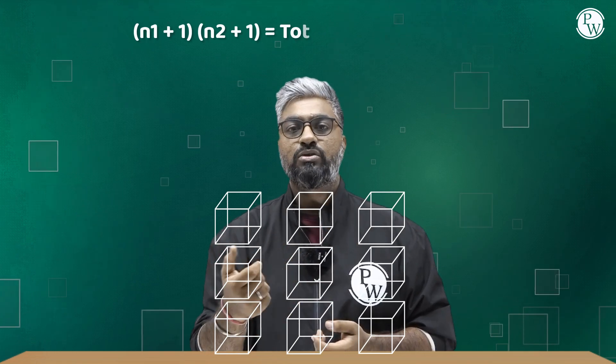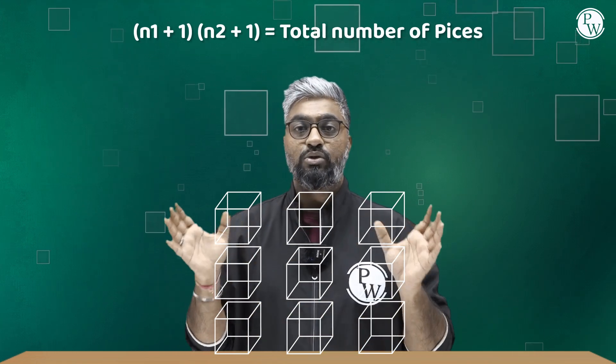If I were to make 2 cuts in each direction — 2 in this direction and 2 in that direction — then 2 plus 1 is 3 pieces, and 3 into 3 gives 9 cuboids in total. They will still be cuboids because along the length it is still 2 centimeters, but along the width and depth we've reduced the dimension by cutting. So when making cuts in 2 different directions, the formula is: N1 plus 1 multiplied by N2 plus 1 gives the total number of pieces.